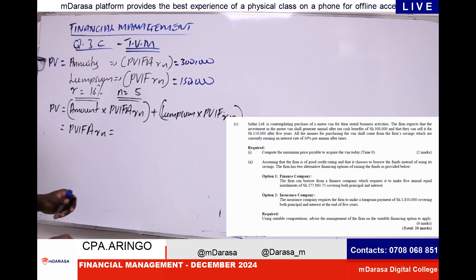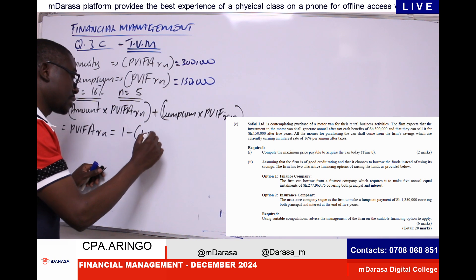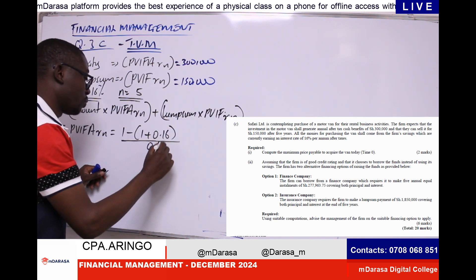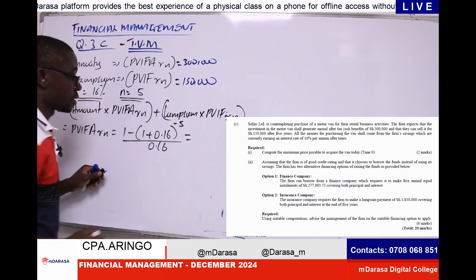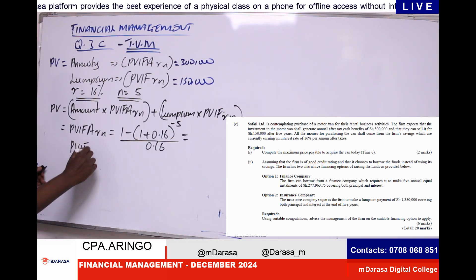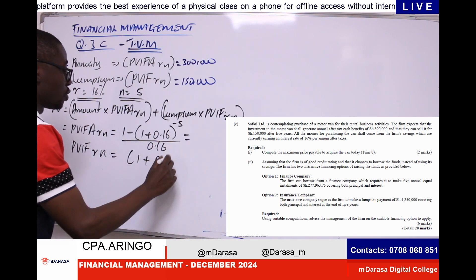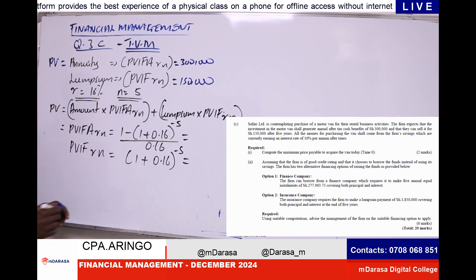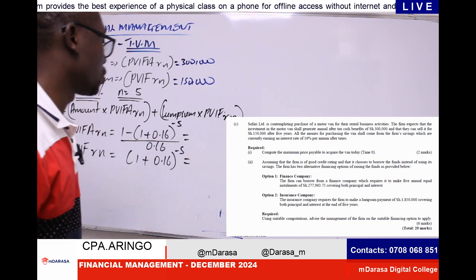For PVIFA at 16%, five years, the formula is [1 − (1.16)^(−5)] ÷ 0.16, giving us a factor of 3.2743. For the lump sum PVIF, it is simply (1.16)^(−5), which gives us a factor of 0.4761. Once you have determined these factors, the rest is very easy — that's why Molimo said we should smile.